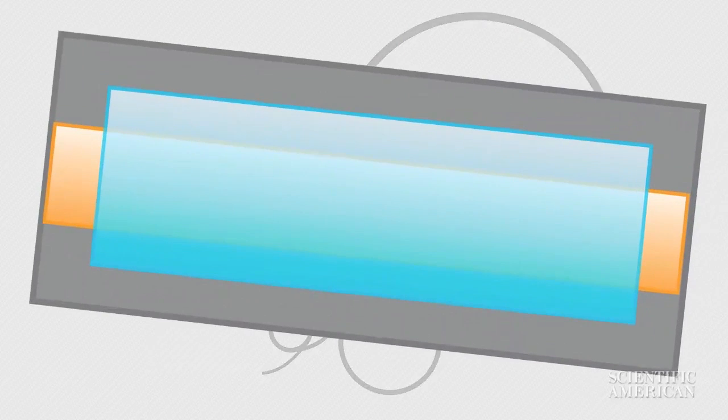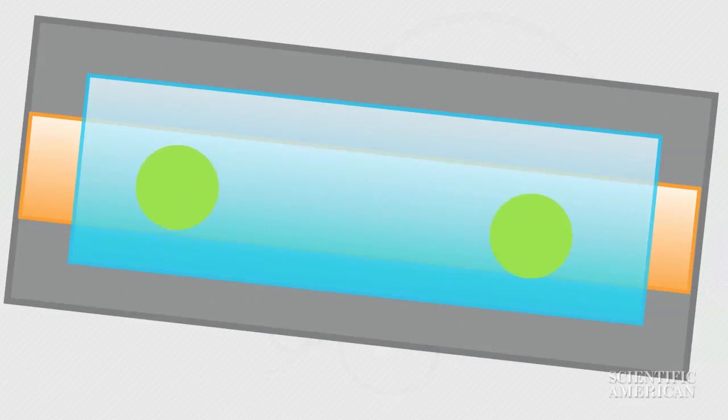Here, we show one of those instruments, known as ATLAS, which consists of layers of detectors that register different species of particles and their properties.